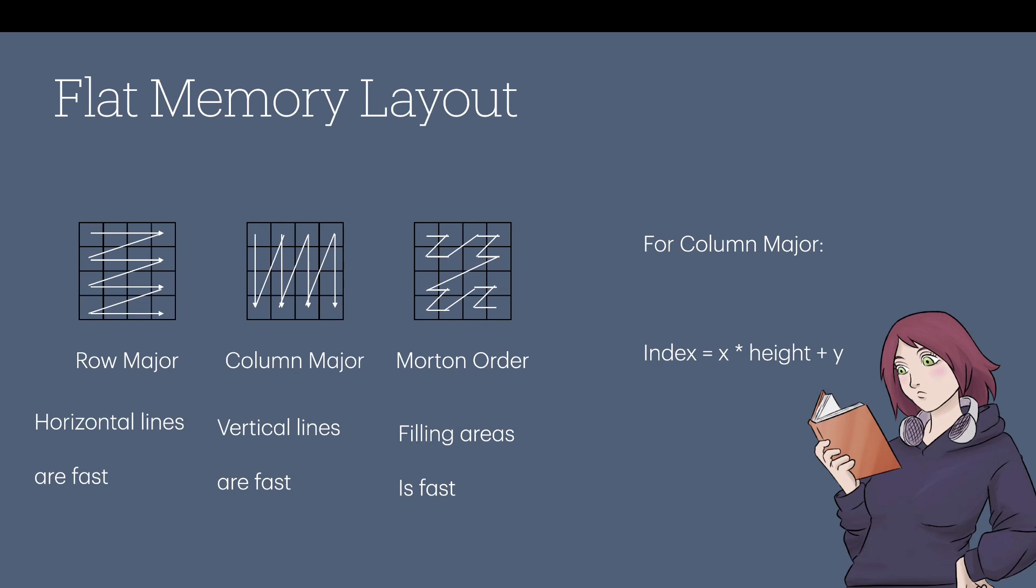On the other hand, we could have a column major layout where we sort of, as we run across our flat array, we're actually running down our screen with a series of vertical lines. And then we reach the bottom of the line, wrap around to the top of the next line, and so on. This is called column major. And in this system, vertical lines are fast.